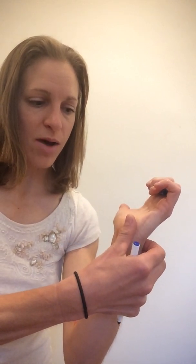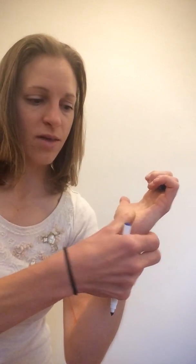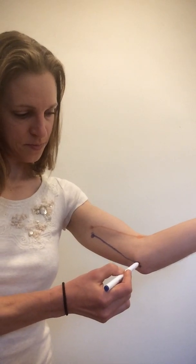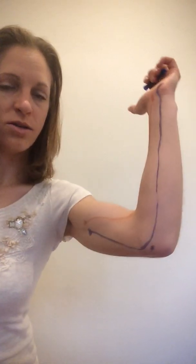So if I place my thumb and palpate the pisiform, I can kind of rock through and also palpate the hook of the hamate. The ulnar nerve is going to pass right in between those two points. So I'm going to connect those dots for my ulnar nerve and trace that course in blue. It's coming along the ulnar side of the wrist and into the hand. So that's going to be my ulnar nerve course.